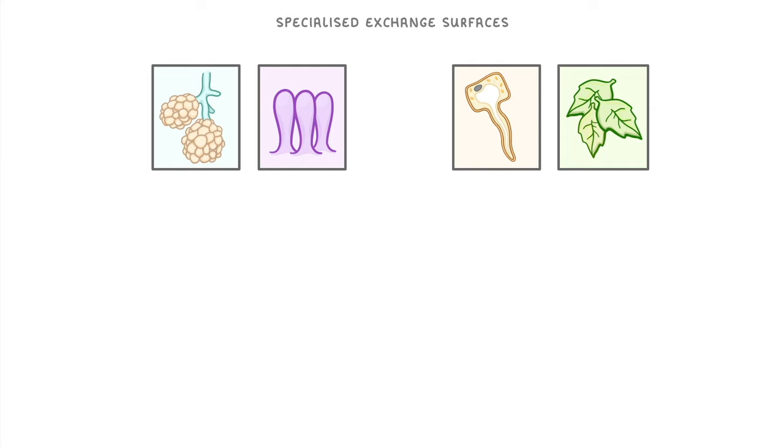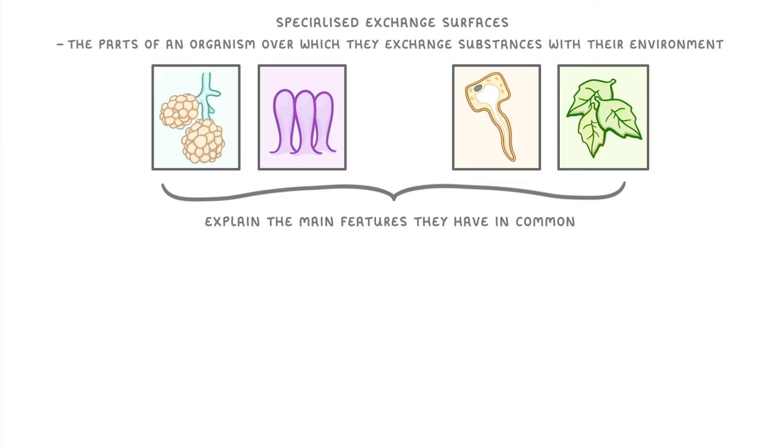In this video, we're looking at specialized exchange surfaces. Although we'll mention a few examples, the aim of this video is to explain the main features that they have in common. Specialized exchange surfaces are the parts of an organism over which they exchange substances with their environment.